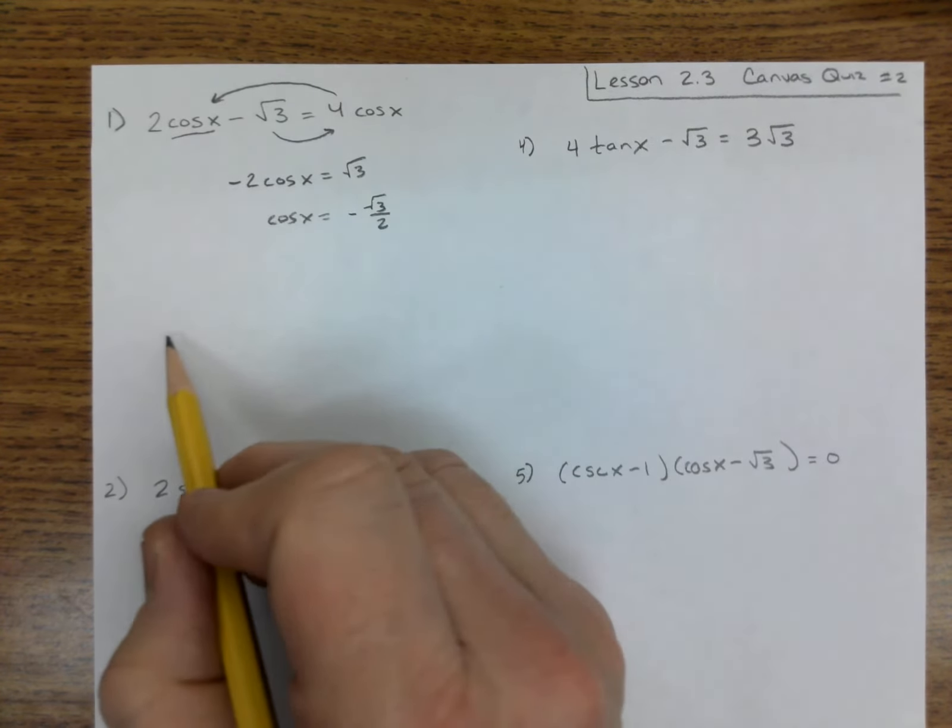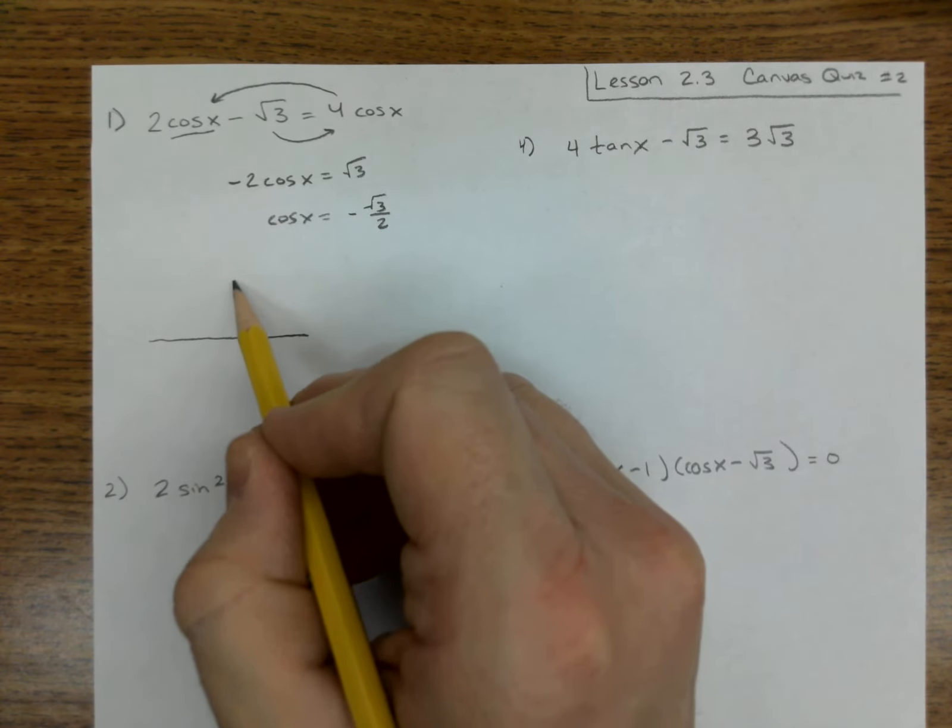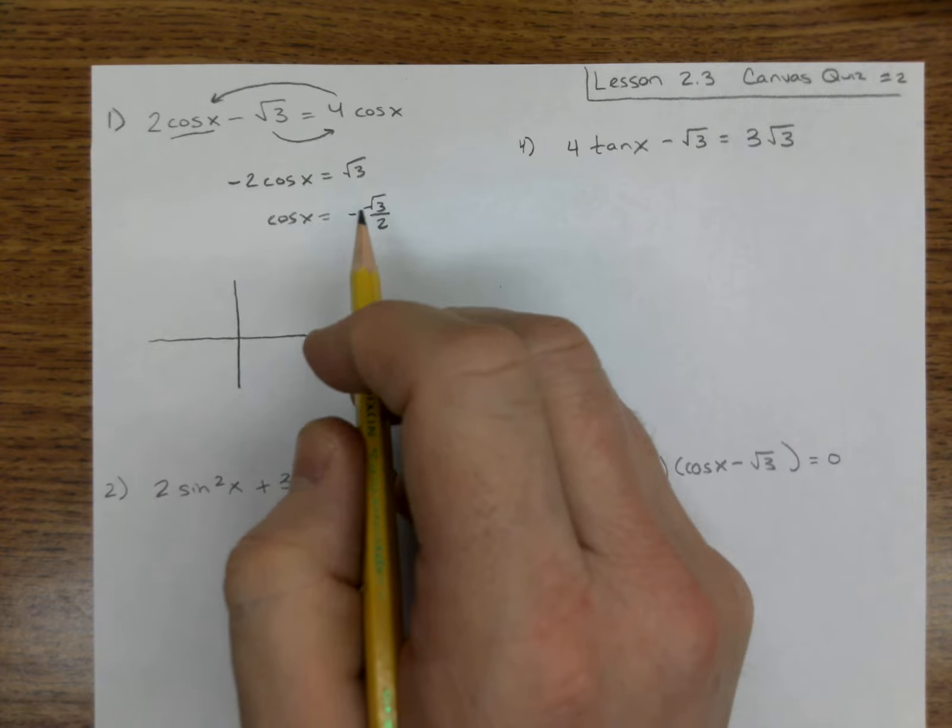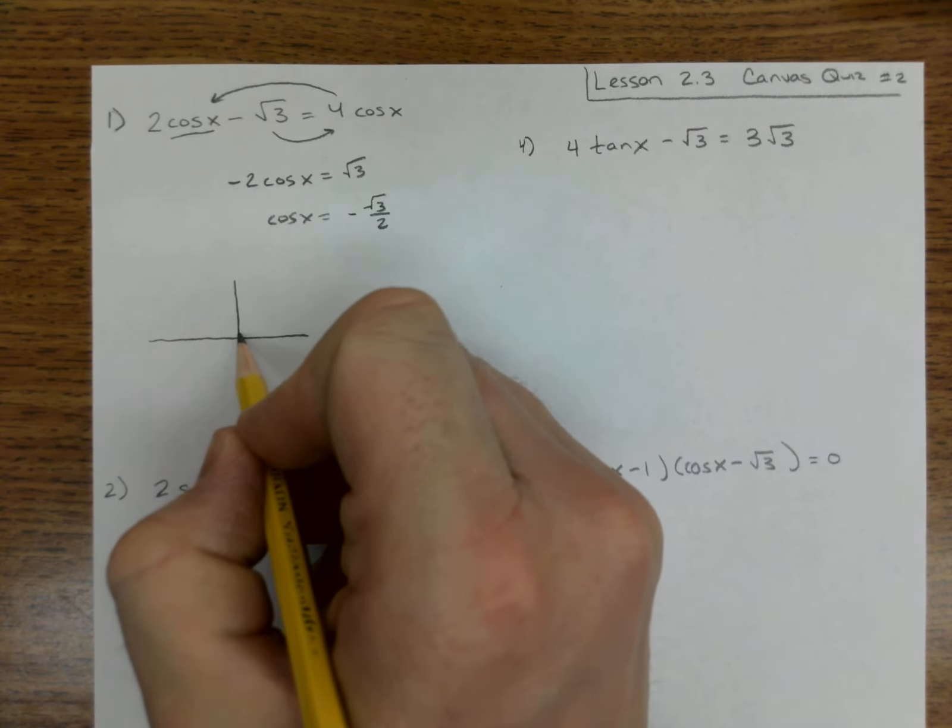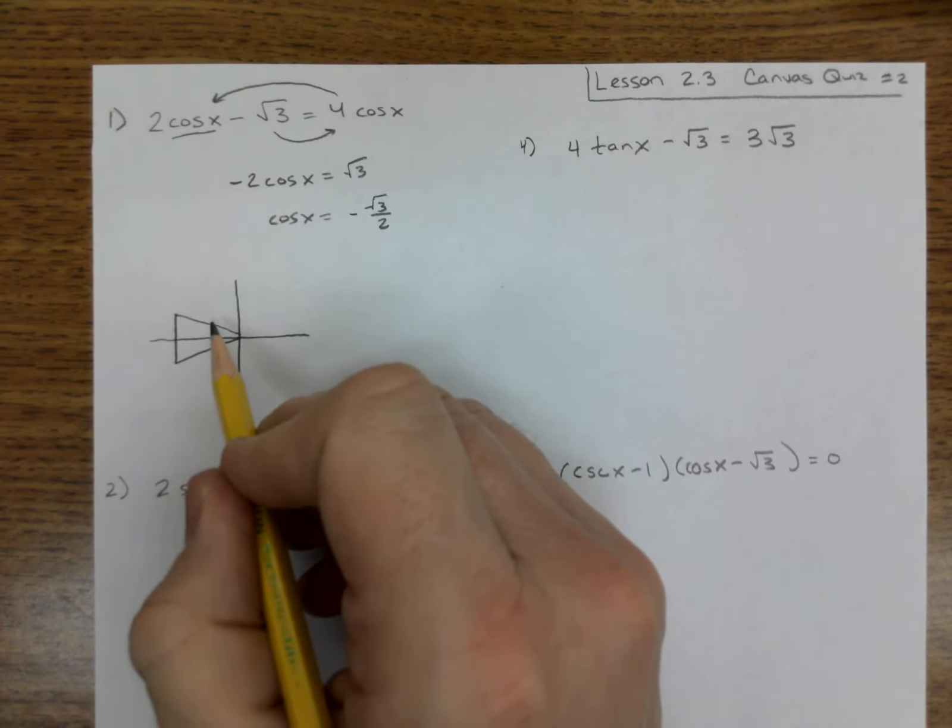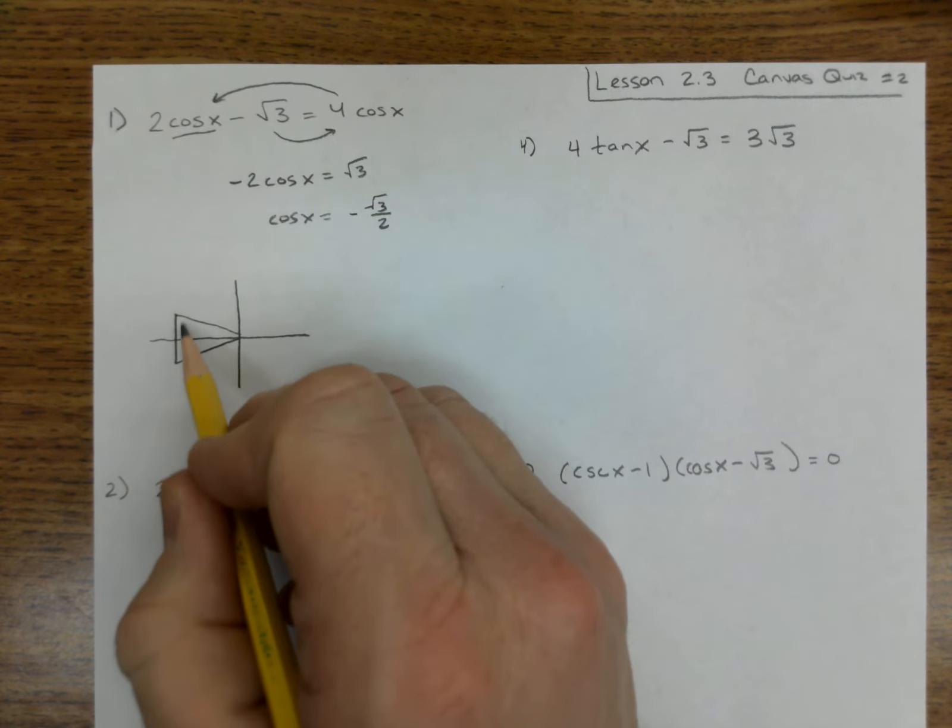Divide by the negative 2, and we're looking for when is cosine equal to negative root 3 over 2. Well, you should have a lot of unit circle little triangles here on your paper, and where is cosine negative root 3 over 2? That's the long side, so it's going to be this long skinny triangle, and it's going to be both up and down because it can go negative and I can go up or down.